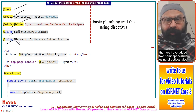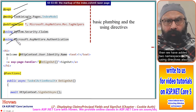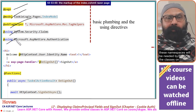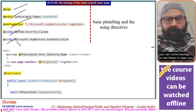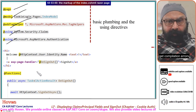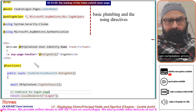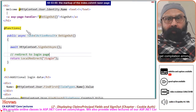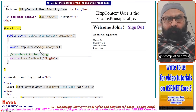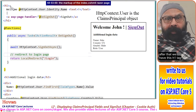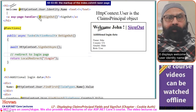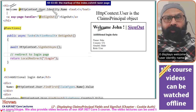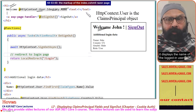We have also added two namespace using directives. These namespaces will be needed by the classes on this page — you can refer back to these if you get compilation errors. After that, we have an h1 tag that displays User.Identity.Name, which shows the name of the logged-in user.